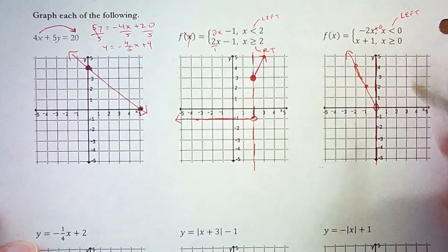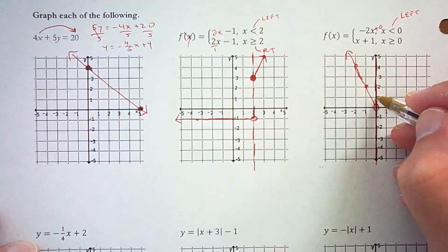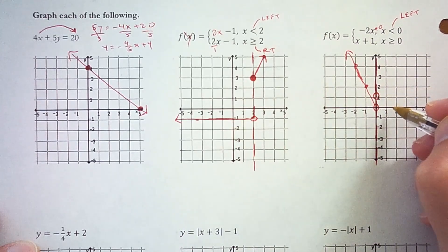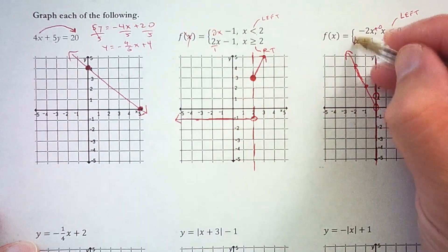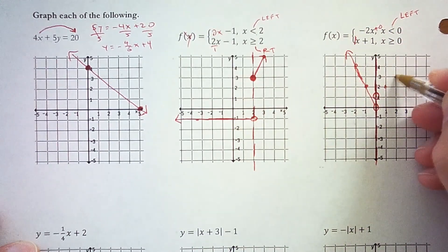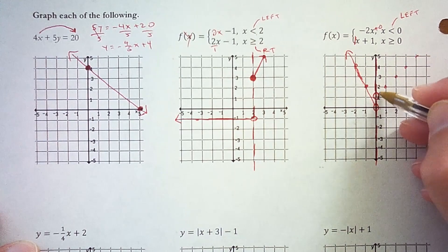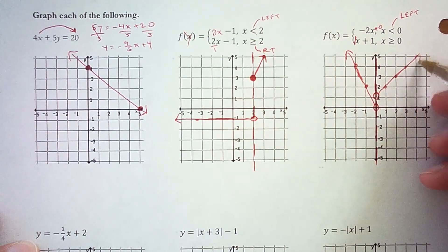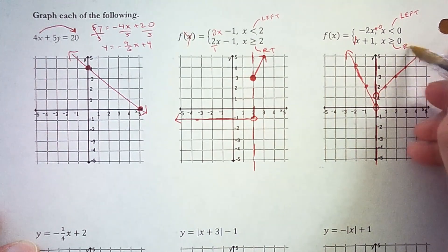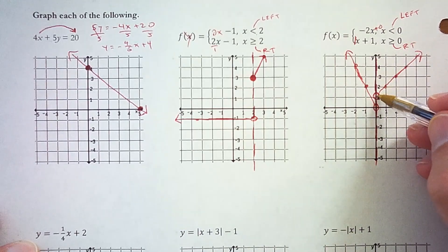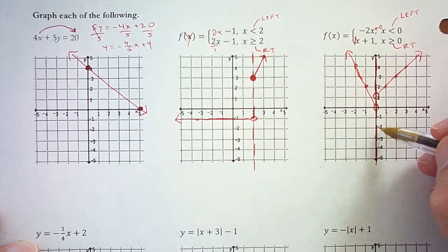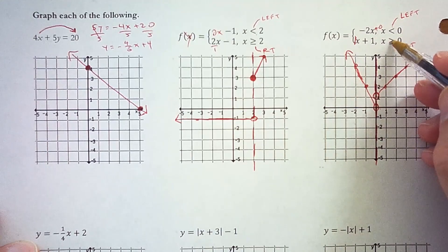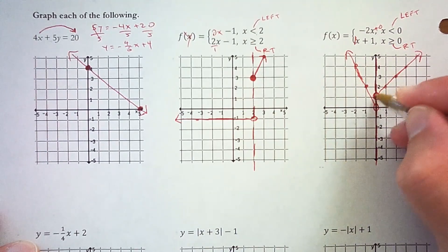The next piece is y equals x plus 1, with a y-intercept of 1. We place a circle there since it's on the edge of the domain. The slope is 1, so we go up 1 and right 1 as many times as we can. It's graphed for x greater than or equal to 0, so we graph to the right side of x equals 0, and because it's greater than or equal to, we fill in that circle.